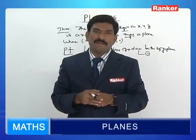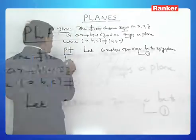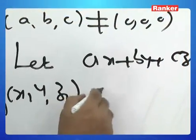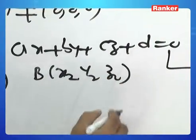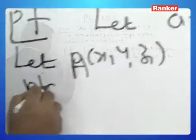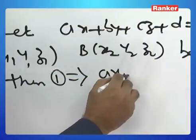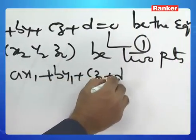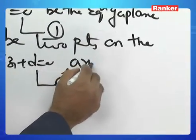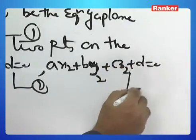For these points to lie on the plane, the surface must be such that the line segment joining them lies wholly on the plane. So from the equation, substituting point A: AX₁ + BY₁ + CZ₁ + D = 0 — call this equation 2. Similarly, AX₂ + BY₂ + CZ₂ + D = 0 — call this equation 3.